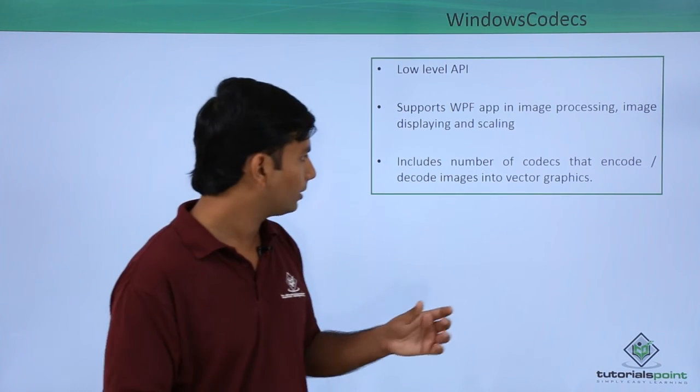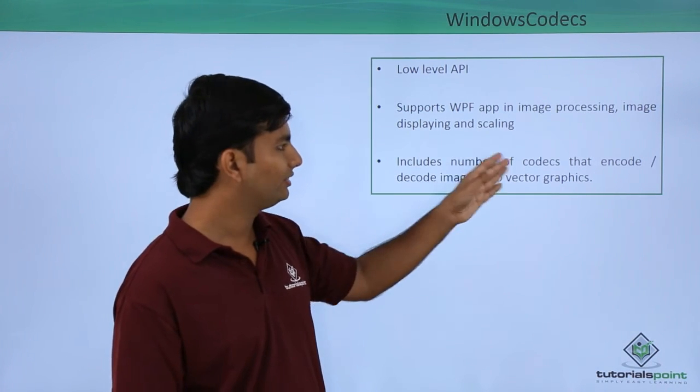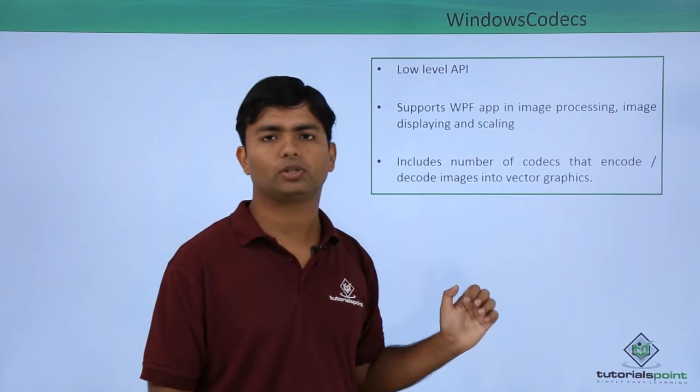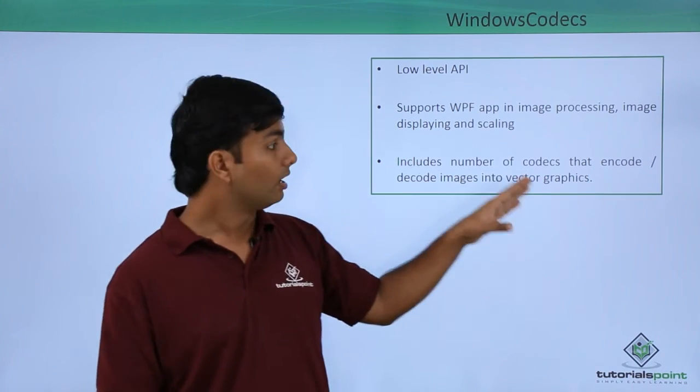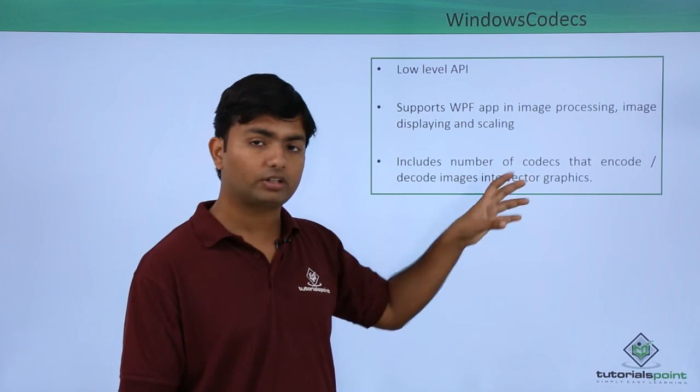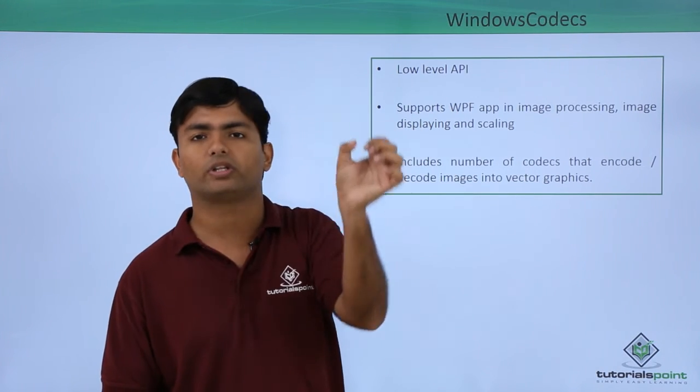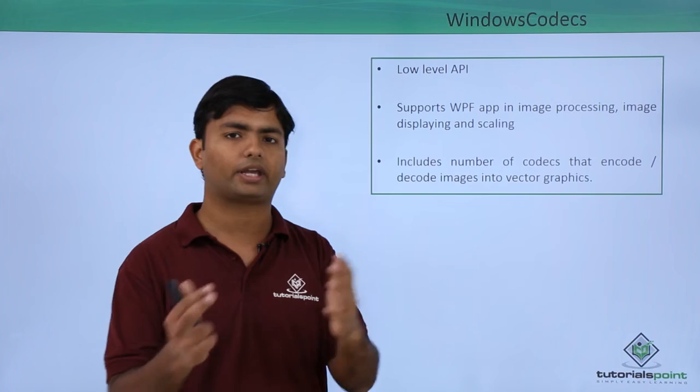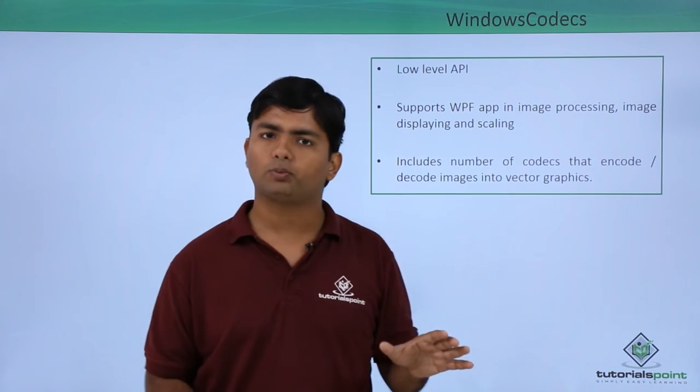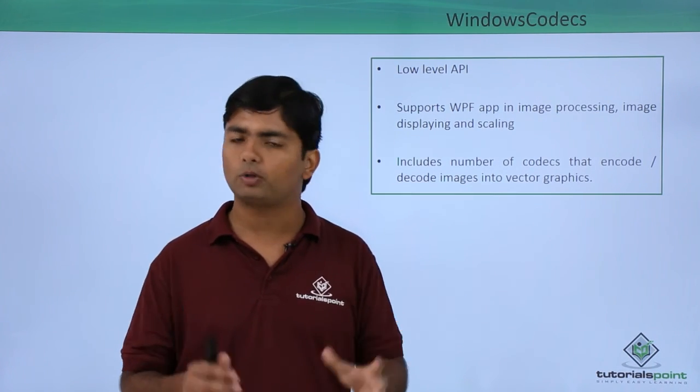It includes a number of codecs that encode and decode the image into vector graphics. After being converted into vector graphics, the image will be put on the window so that an end user can see it. These are all the things which are very much related to the WPF architecture.